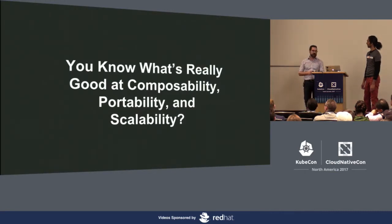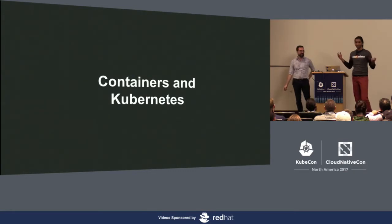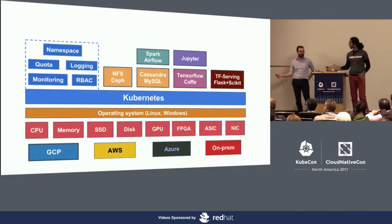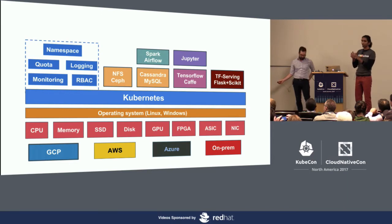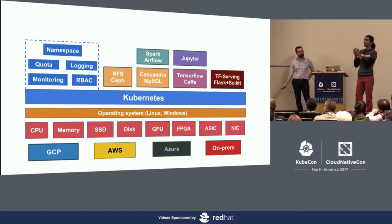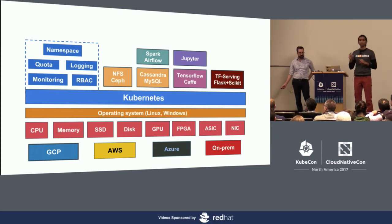So what's really good at composability, portability, and scalability? Well, the answer should be clear - it's Kubernetes. It's already doing all of this. Here's a high-level picture: I want to drill on it a little bit more because I want people to think of Kubernetes this way. Kubernetes is abstracting out a whole lot of things - it's abstracting out your cloud, whether it's a public cloud or a private cloud, you don't have to worry about that.